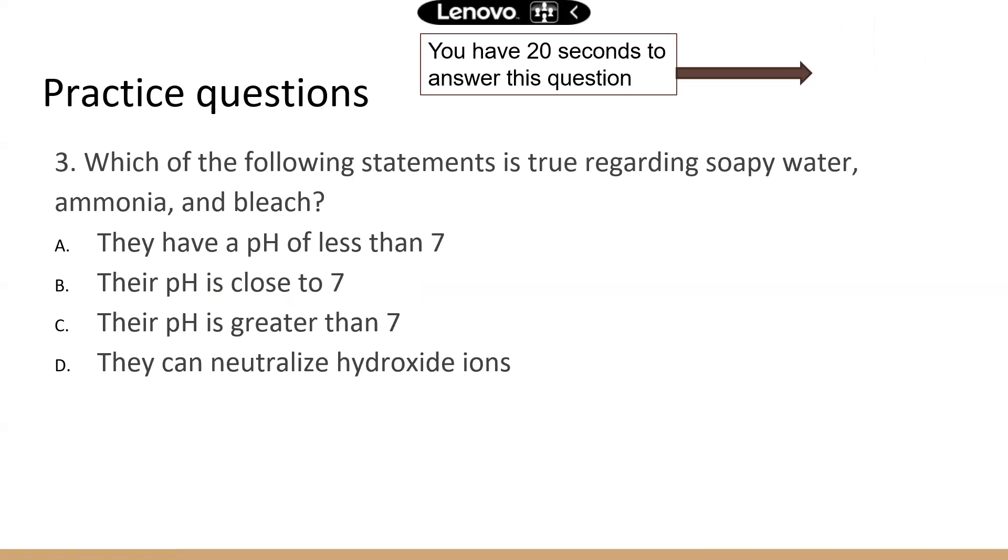This is about soapy water, ammonia and bleach. And you know that they're all basic. So if they're basic, their pH is going to be greater than seven. Now B is not correct because bleach can be very basic. I can't remember the exact pH, probably around 10, 11, 12 in that range. So it's not going to be close to seven. They can neutralize a hydrogen ion. So if you change that to a hydrogen ion, that would be correct. All right, next question.